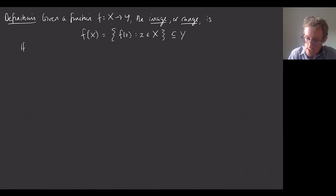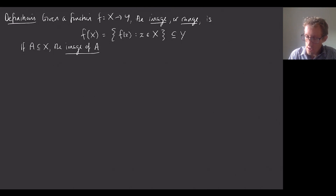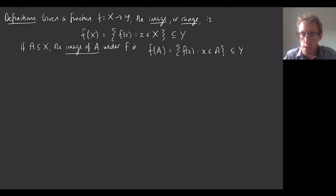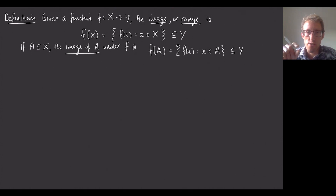More generally, if A is a subset of X, then the image of A under the map f is f(A), which is the set of all f(x) where x was in A. That's like the image of the whole function, but restricting to values of x in the subset A.